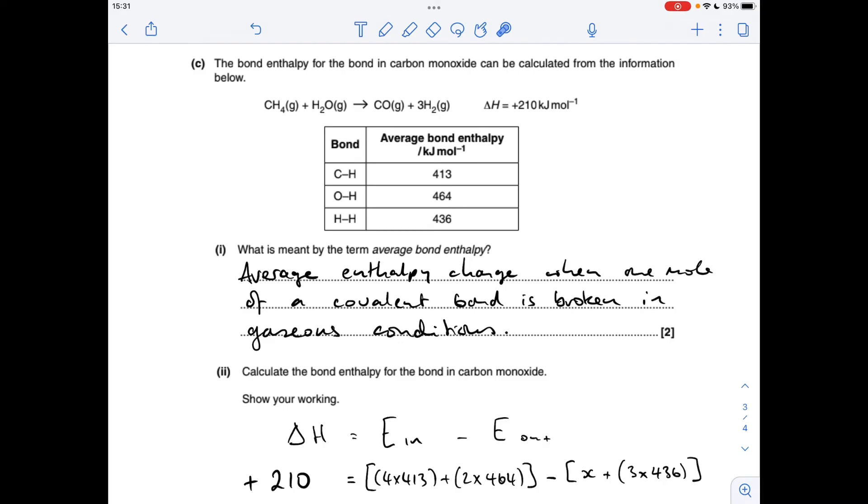The energy in, so that's the energy to break the bonds in the reactants. So in CH4, in a mole of CH4, there's four CH bonds, four moles of CH bonds. So we multiply the bond enthalpy by four. And then we add to that the energy to break two moles of OH bonds because in one mole of H2O, there's two OH bonds.